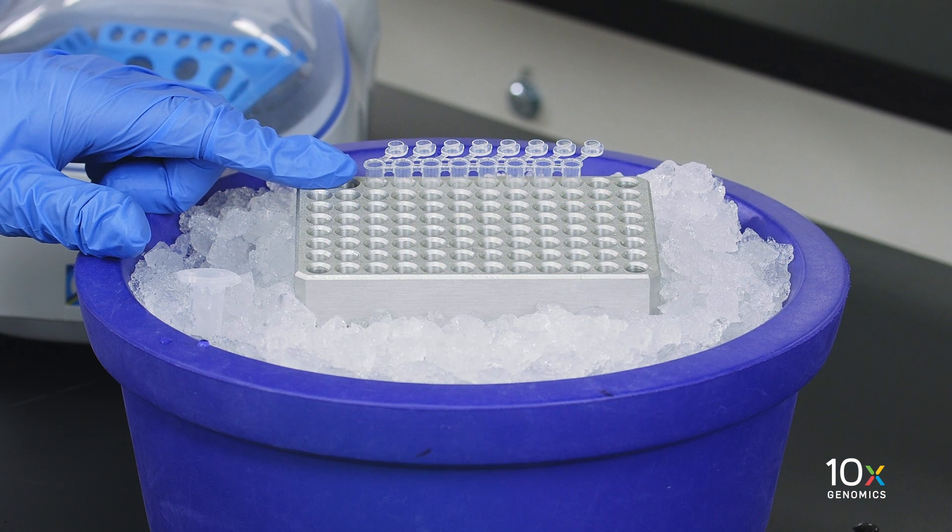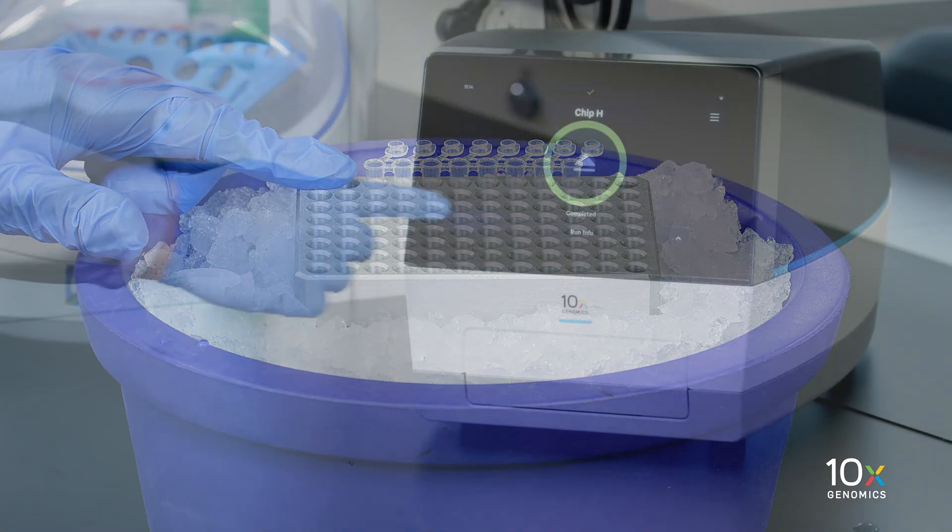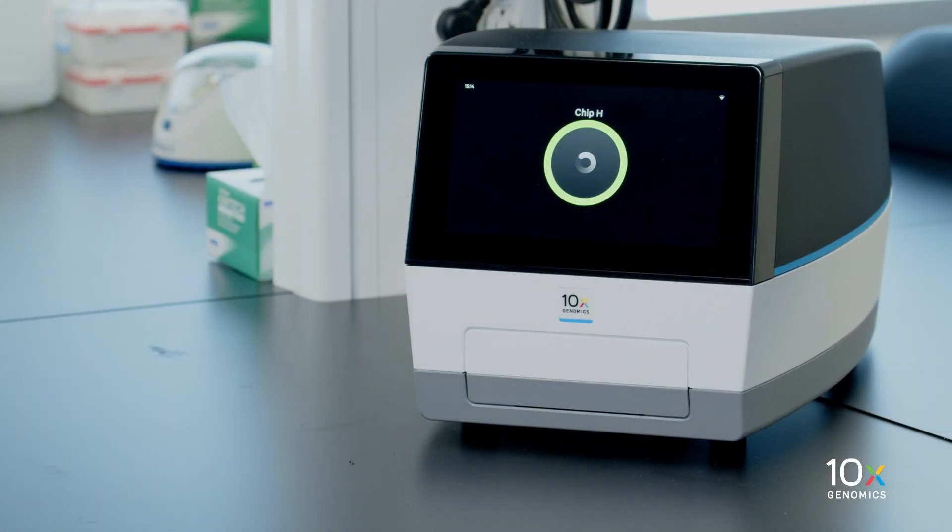First, place a PCR-8 tube strip on ice. Press the eject button and remove the chip.